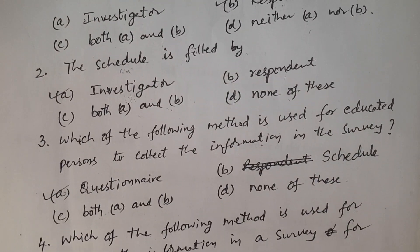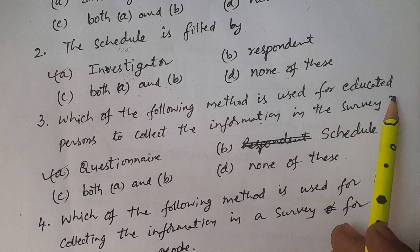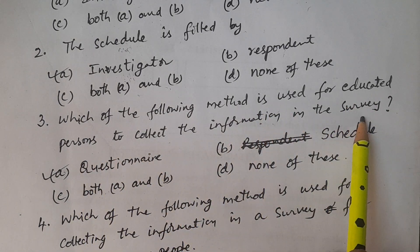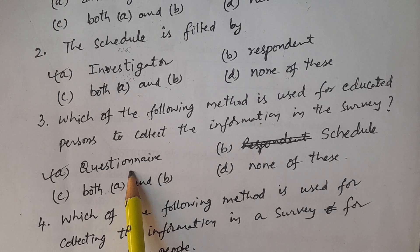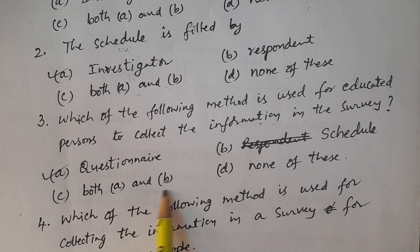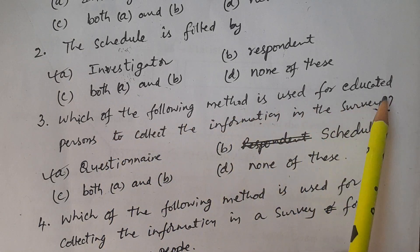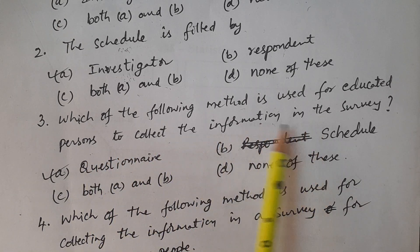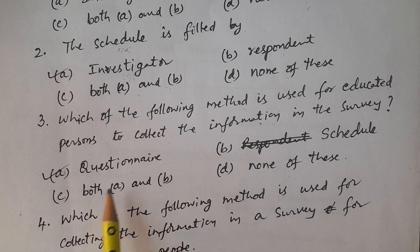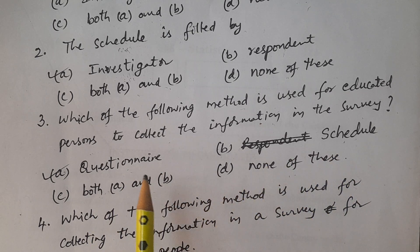Third question: which of the following methods is used for educated persons to collect information in a survey? Options: A. Questionnaire, B. Schedule, C. Both A and B, D. None of these. The answer is questionnaire.